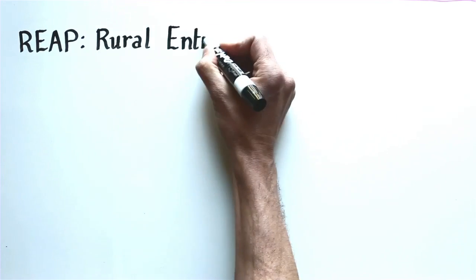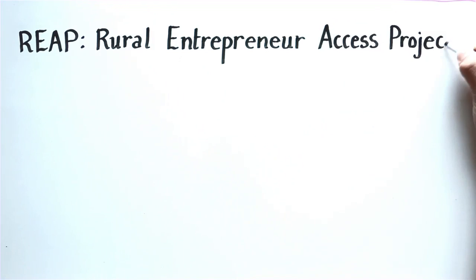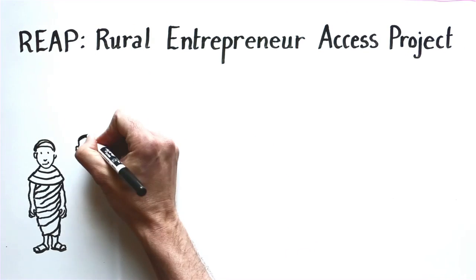Our Rural Entrepreneur Access Project, REAP, is a two-year poverty graduation program with six steps.